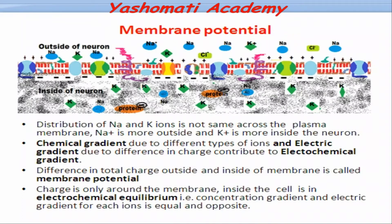In the membrane, there is a sodium-potassium pump present, which is continuously working. Due to the working of the sodium-potassium pump, three sodium ions are moved out and two potassium ions are moved in by utilizing one ATP. So every time three positive ions are moving out and two positive ions are moving in, and because of that, a positive charge is developed on the outer side.